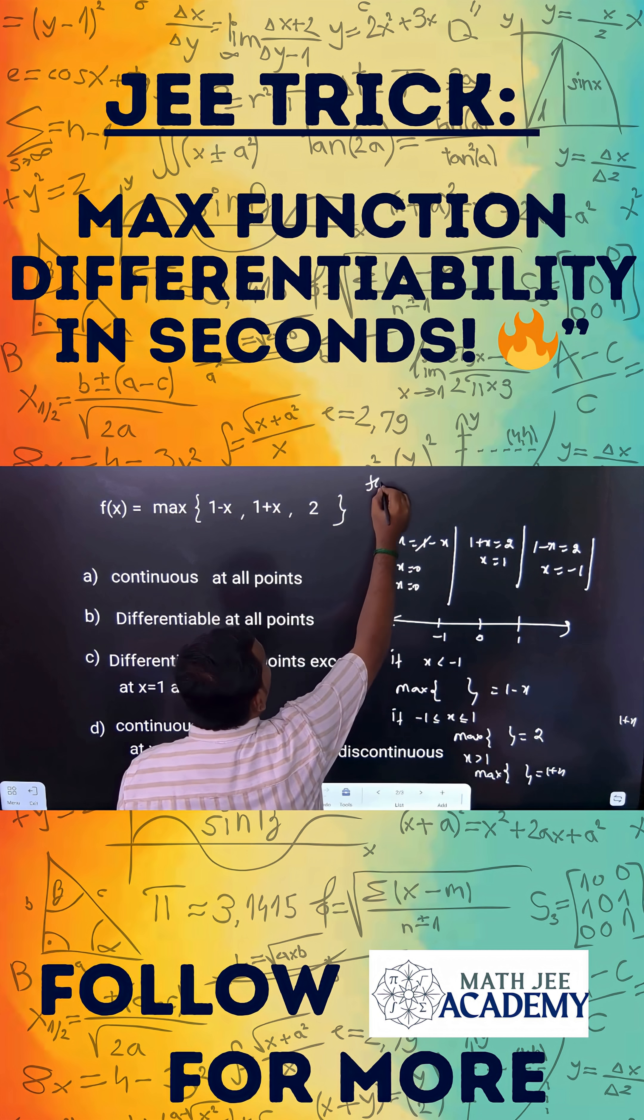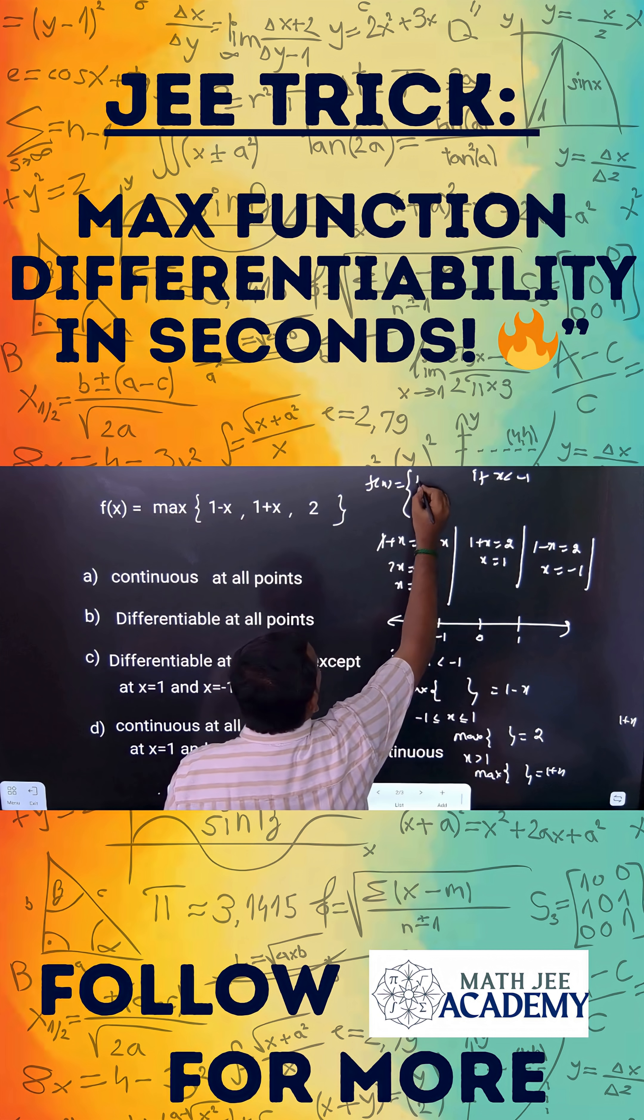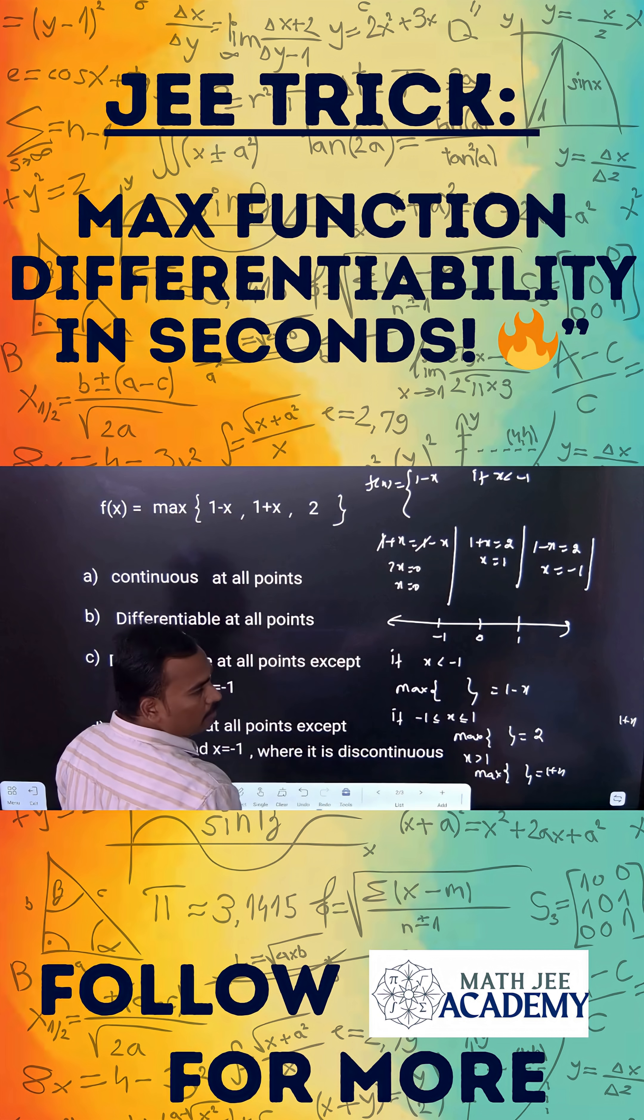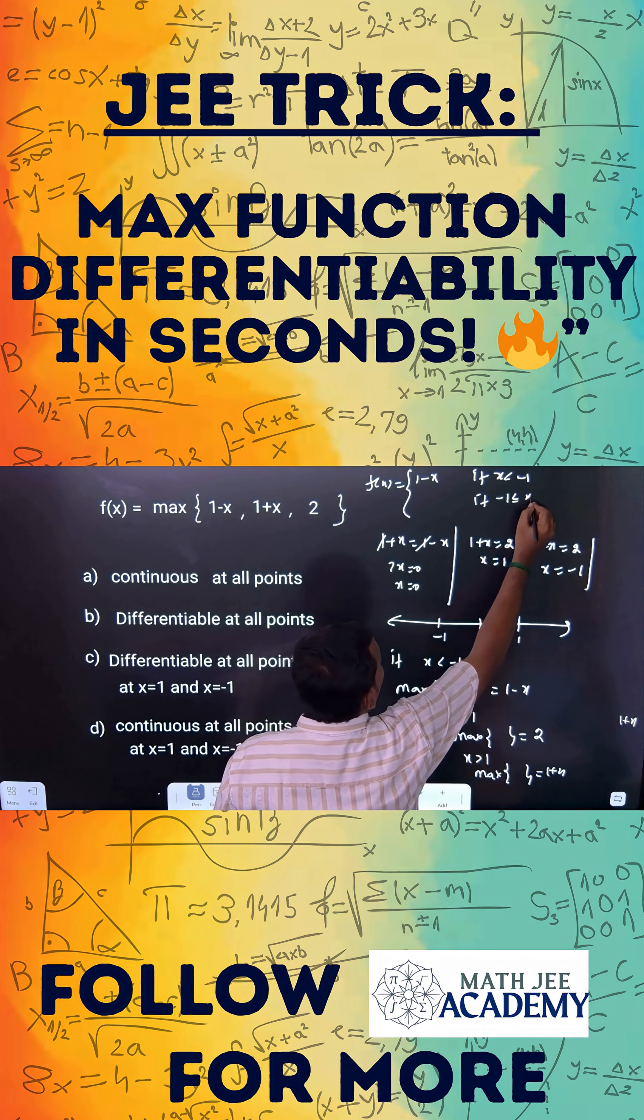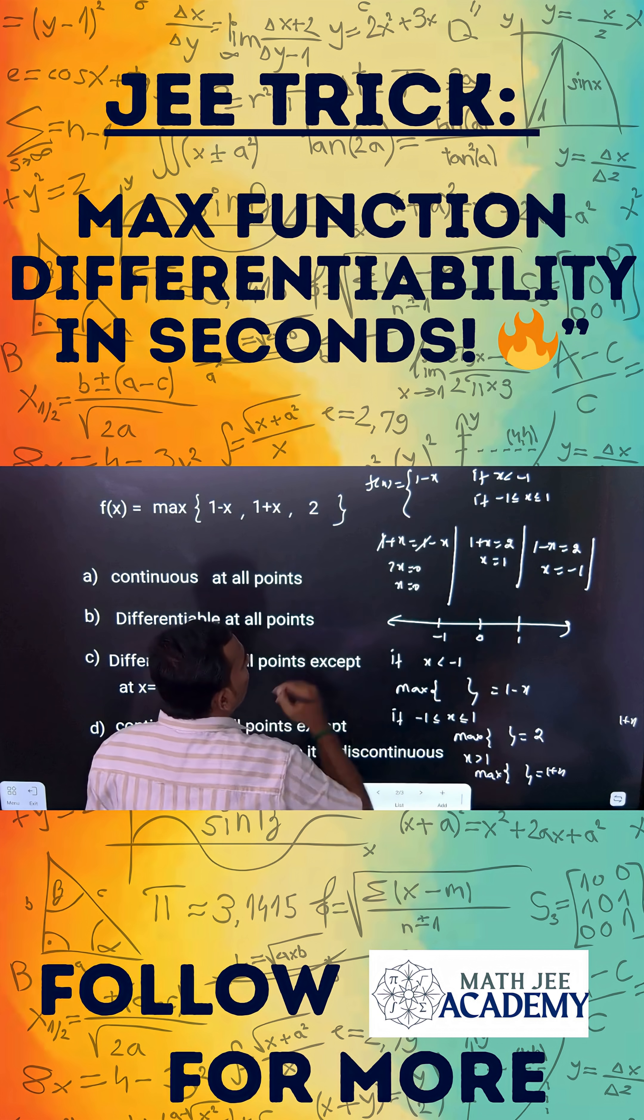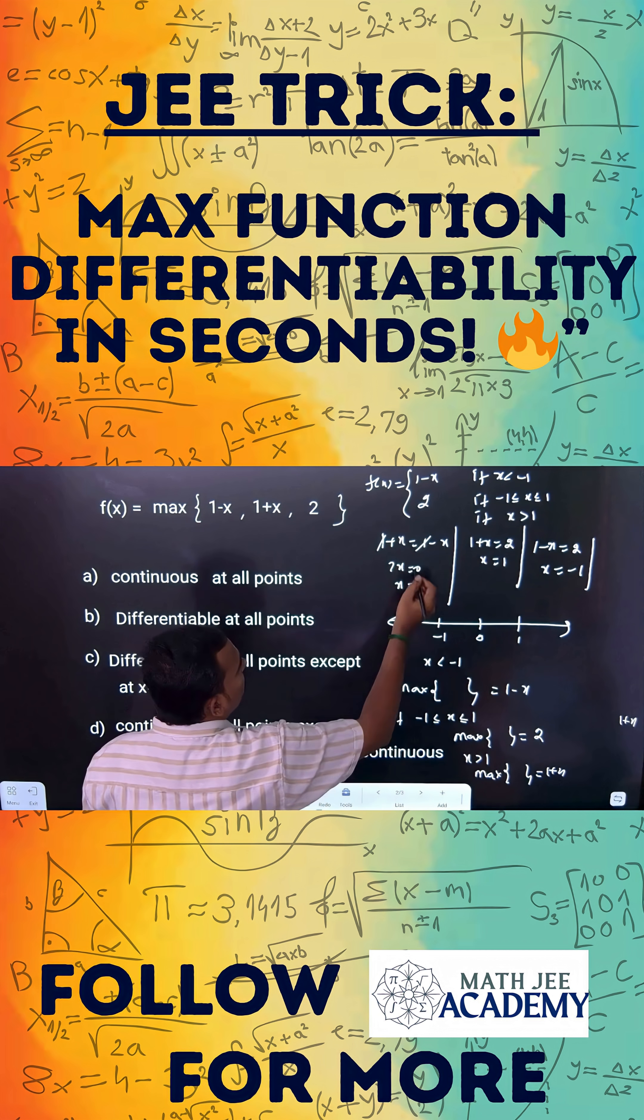Then how to redefine the function f of x equal to, if x is less than minus 1, the graph is 1 minus x is the maximum of these three functions. If x is minus 1 to 1, the maximum is 2. If x is greater than 1, the maximum here is 1 plus x.